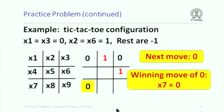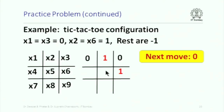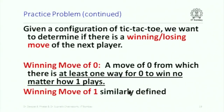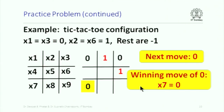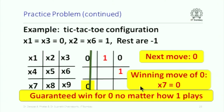Is x7 equals 0 the only winning move? If instead you move somewhere else — for example placing 0 at another position — that could also be a winning move if the second player cannot block both diagonals simultaneously. So there can be two winning moves. The key point: a winning move for 0 is one from which there is at least one way for 0 to win no matter how 1 plays — guaranteeing a win for 0.